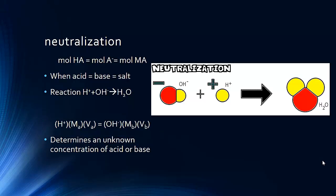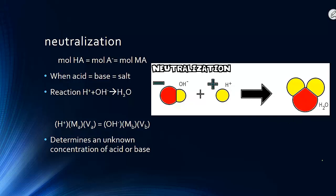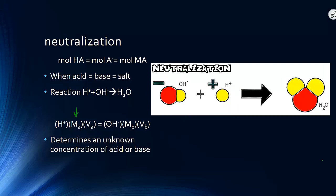When an acid and a base react, they always produce the same products: water and some salt. When an acid and a base interact, they neutralize one another. The net ionic equation for an acid-base reaction is that the hydroxide and the hydrogen ions produce water — a very simple one-to-one ratio. When the amount of base is equal to the amount of acid, they have neutralized one another. In a titration we determine either the concentration of an unknown acid or base, or how much acid or base would be needed to neutralize its counterpart. When the moles of acid equal the moles of base, they are neutralized.